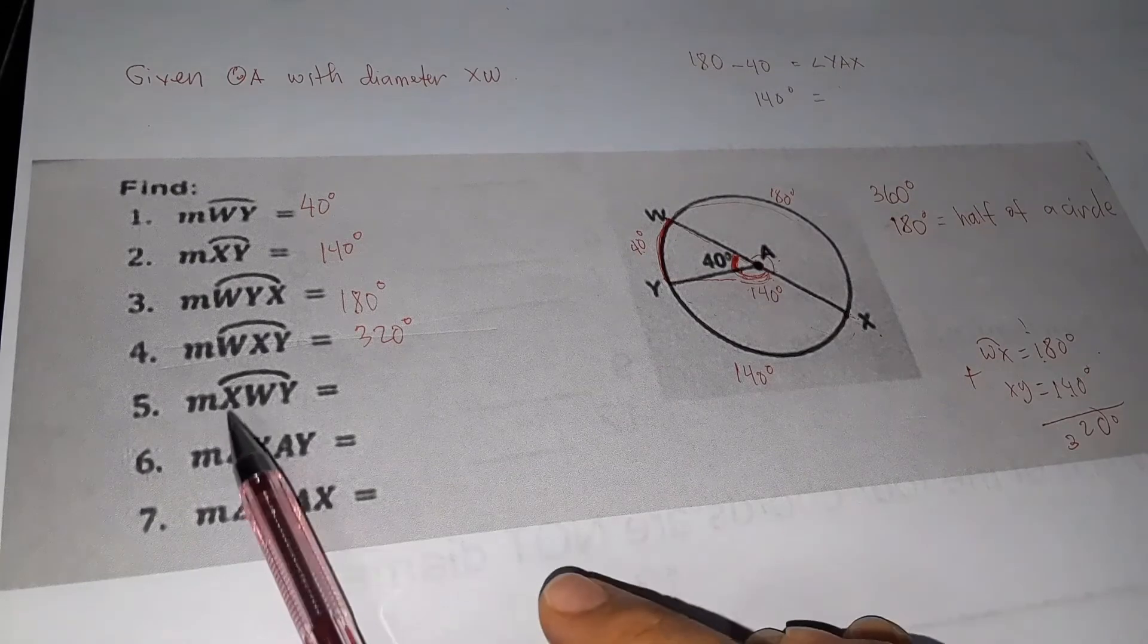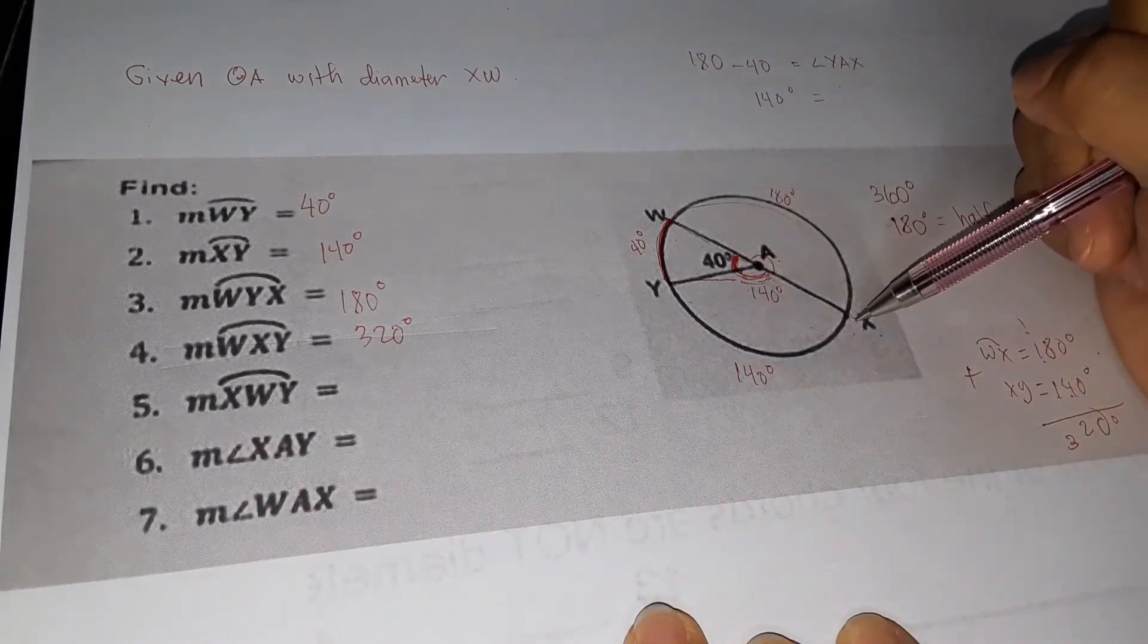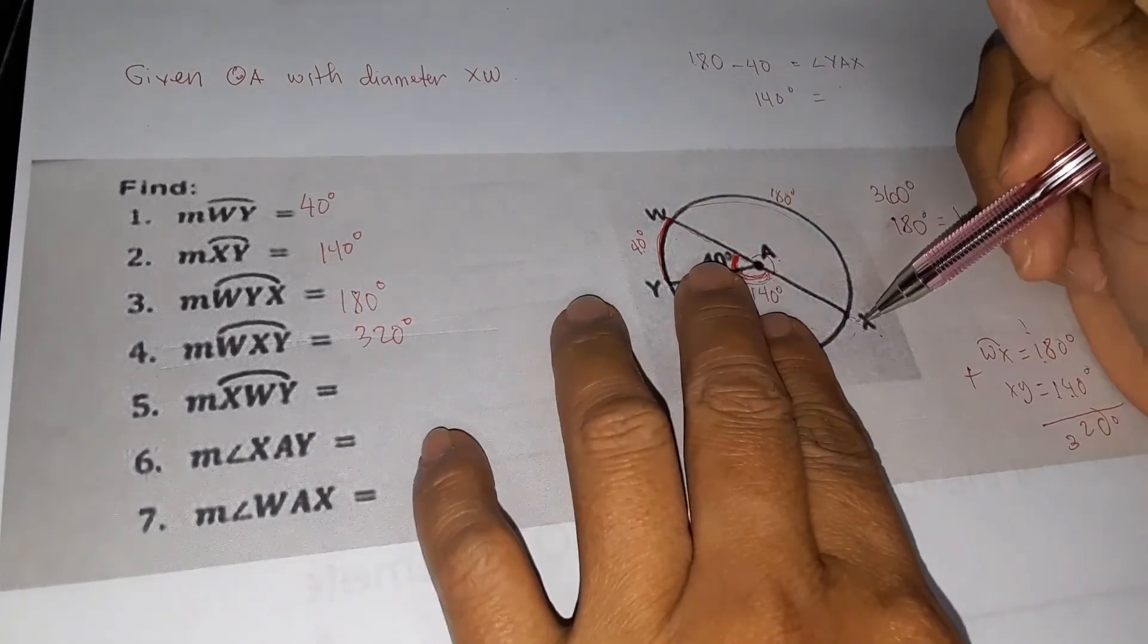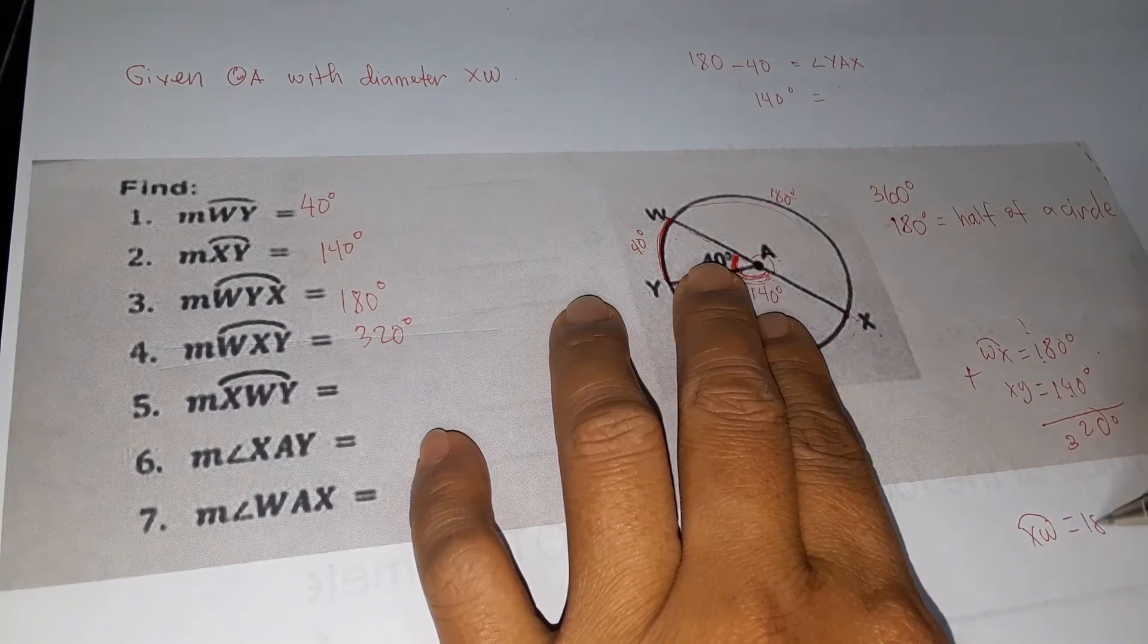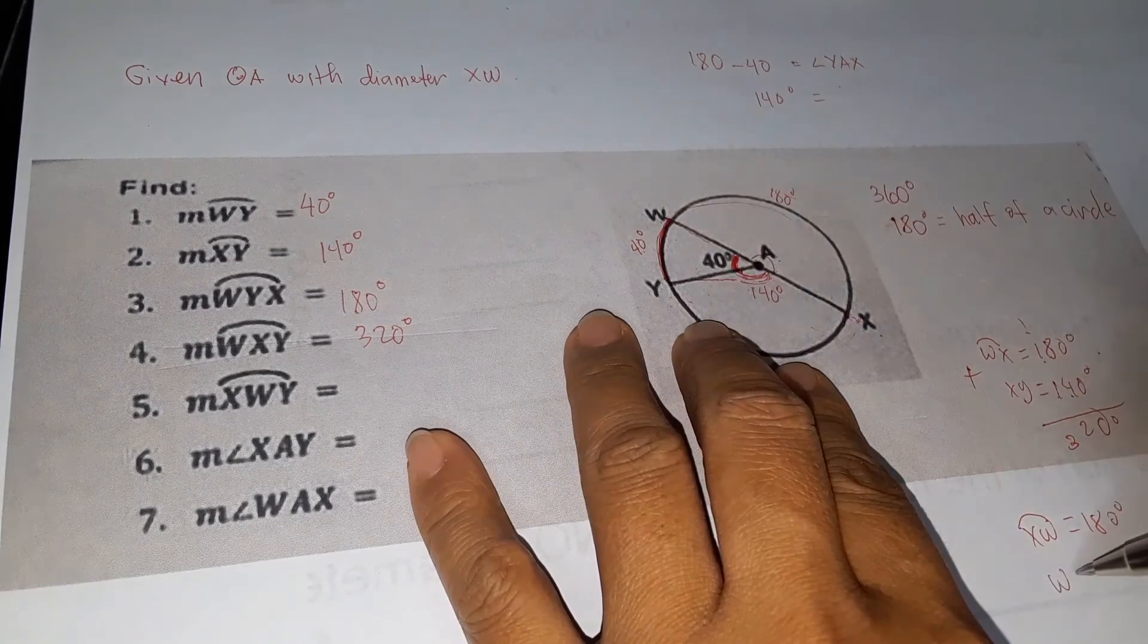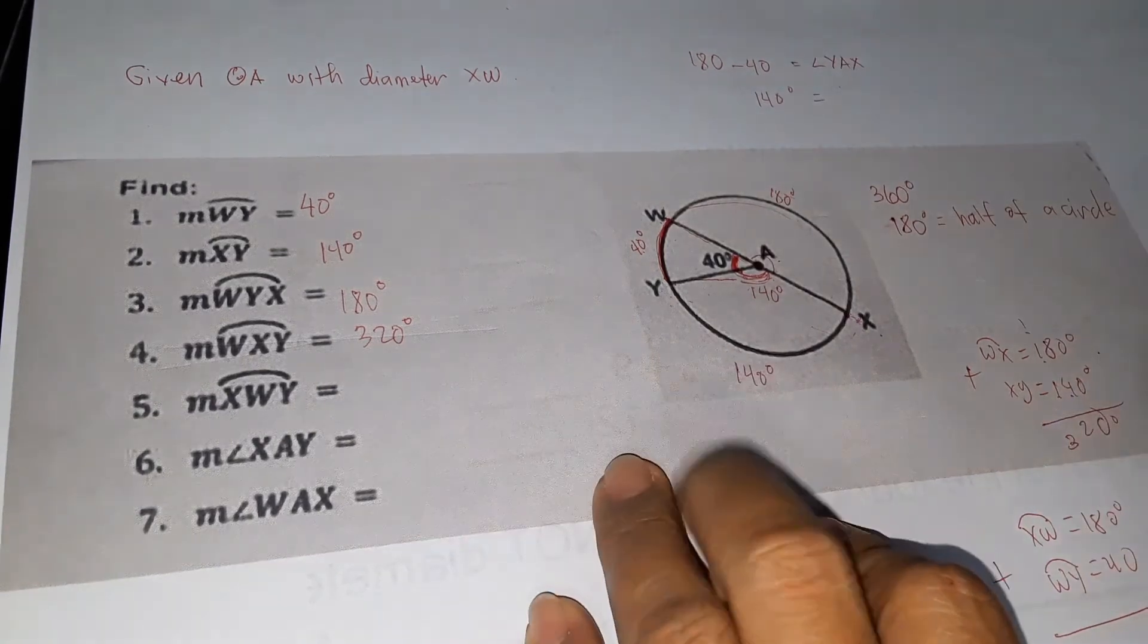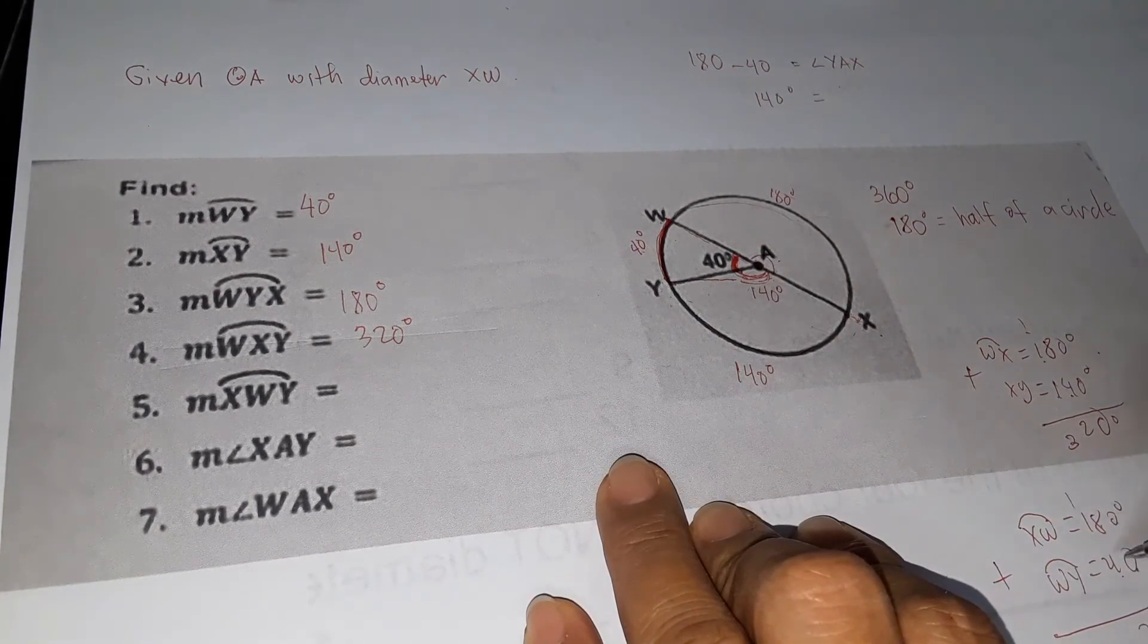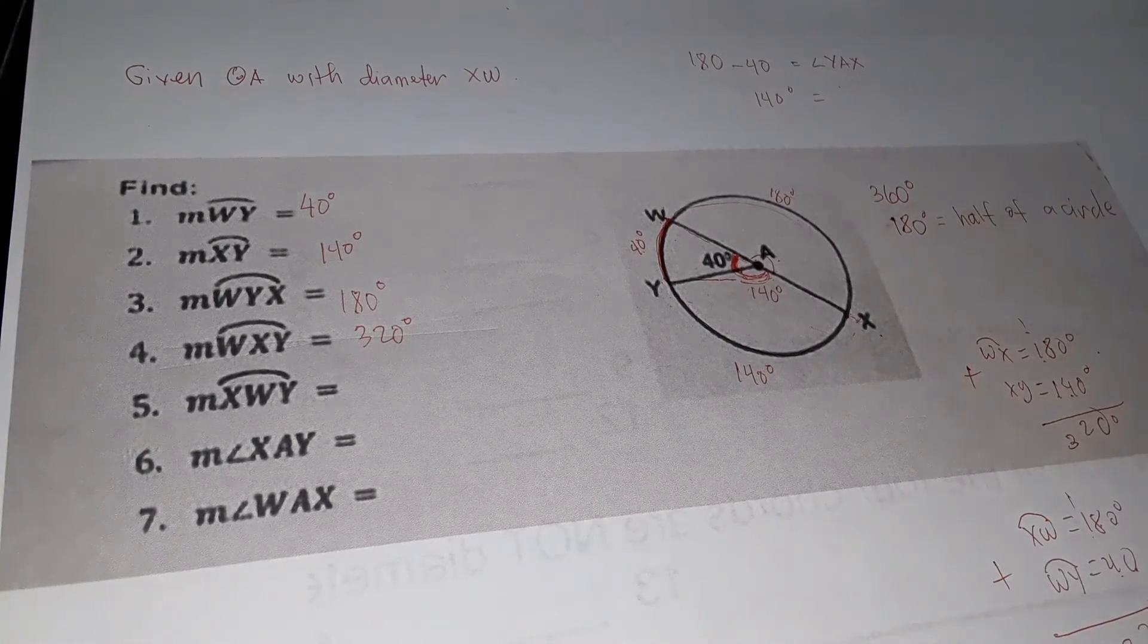Next, number five, measurement of arc XWY. Arc XW is 180, and WY is 40. So we add them: zero, eight plus four equals twelve, carry one, one two. So we have 220 degrees.